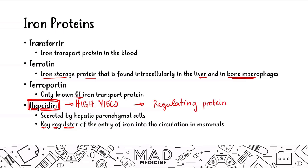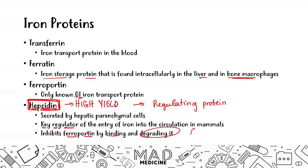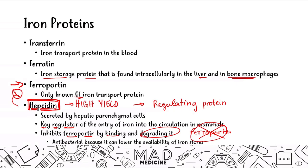Hepcidin is secreted by the hepatic parenchymal cells and is the key regulator of iron into the circulation in mammals — it is the main protein regulating iron. What hepcidin does is inhibit ferroportin by binding to it and degrading it. Since ferroportin helps iron go into our blood and aids absorption in the GI tract, hepcidin blocking ferroportin prevents proper iron absorption. This is useful because hepcidin functions as an antibacterial agent — it lowers the availability of iron stores, which harms bacteria because bacteria need iron to function. This is very high yield; don't forget about hepcidin.